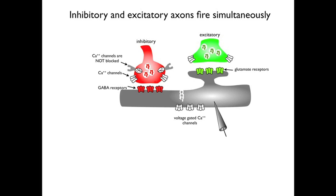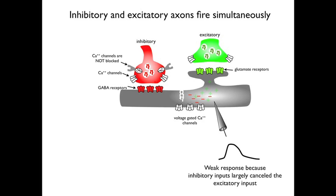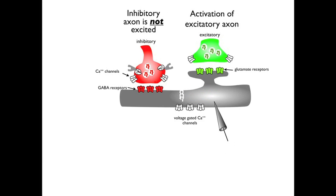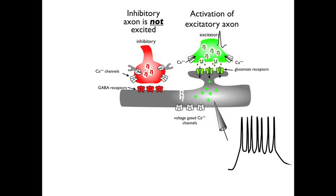In the first condition, the calcium channels on the inhibitory terminal are not blocked, and the inhibitory and excitatory fibers are now activated simultaneously. There is an influx of negative charges through the GABAergic inhibitory receptors and an influx of positive charges through the glutamatergic receptors on the postsynaptic cell. The influx of negative charges largely cancels the positive charges, thereby generating a weak response in the postsynaptic cell. In the second condition, the inhibitory fibers are inactive and only the excitatory fibers fire. The influx of positive charges through the excitatory glutamate receptors generates a large excitatory response in the postsynaptic cell, because the positive charges are unopposed by any influx of negative charges since the inhibitory fiber is not firing.